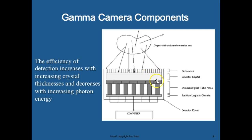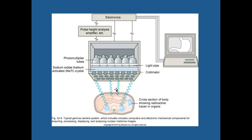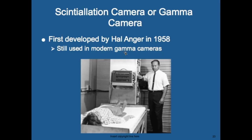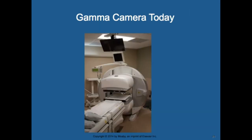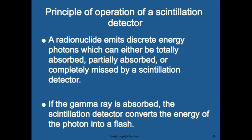Here's the layout: the patient is followed by the collimator, then the sodium iodide crystals, then lead pipes, then photomultiplier tubes, and finally the electronics. The scintillation camera or gamma camera was first developed by Hal Anger in 1958 and is still used in modern technology.